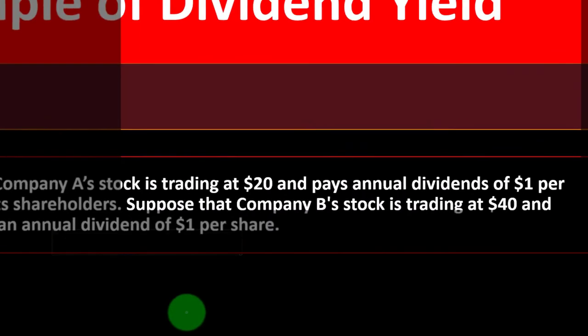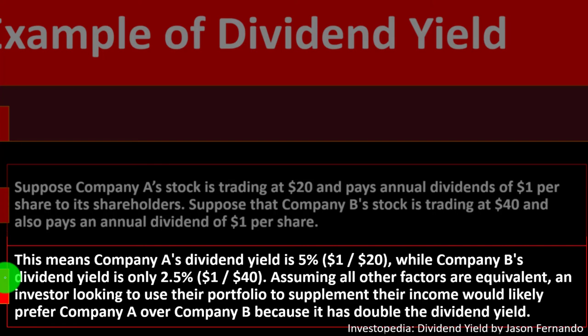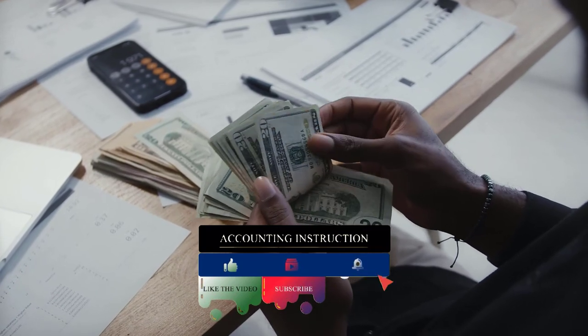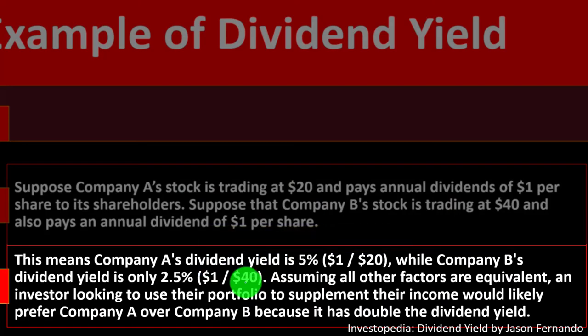Example of dividend yield: suppose Company A's stock is trading at $20 and pays an annual dividend of $1 per share. Company B's stock is trading at $40 and also pays an annual dividend of $1 per share. Company A's dividend yield is 5% ($1 / $20), while Company B's dividend yield is only 2.5% ($1 / $40). Assuming all other factors are equivalent, investors looking to supplement their income would likely prefer Company A because it has double the dividend yield relative to its purchase price. However, dividend yield is not the only factor to consider when making investment decisions.